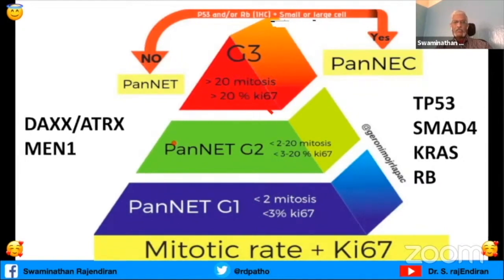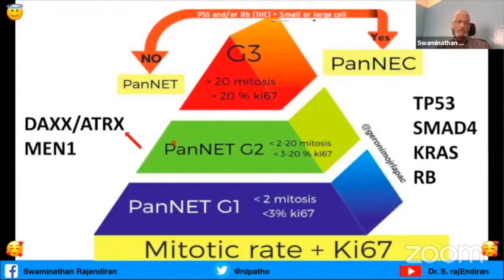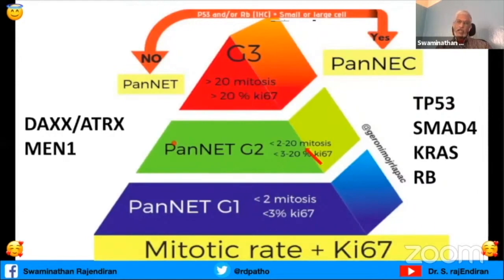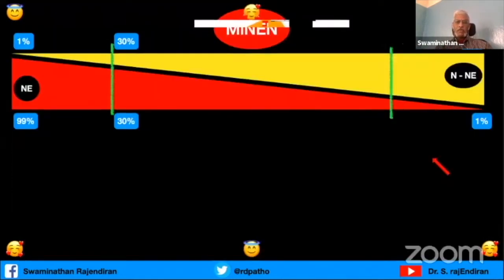Neuroendocrine tumor grade 2 or atypical carcinoid: mitosis 2 to 20, or Ki-67 3 to 20%. Grade 3 is neuroendocrine tumor grade 3 - it is not neuroendocrine carcinoma because there is a lot of difference in prognosis and treatment. In neuroendocrine carcinoma, nested pattern may be present in some areas but in other areas cells are arranged in sheets, mitosis more than 20, and Ki-67 more than 20%. This is G3, and a very good question is how to differentiate G3 from neuroendocrine carcinoma.